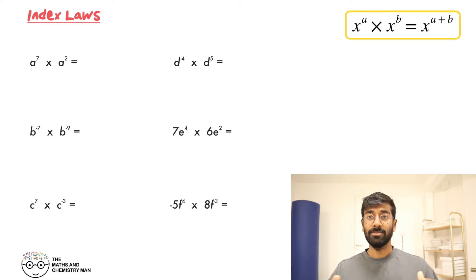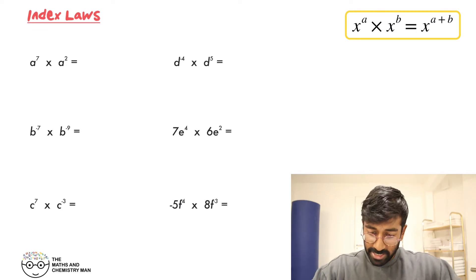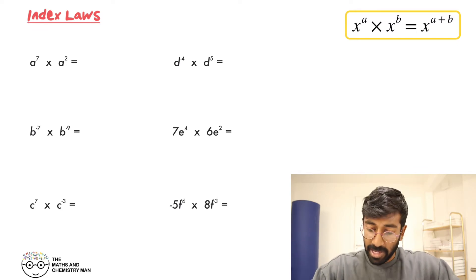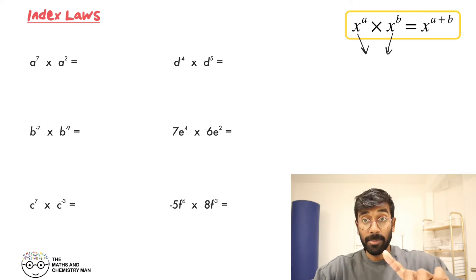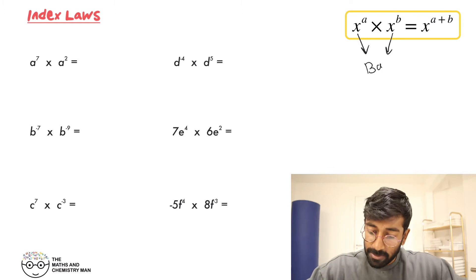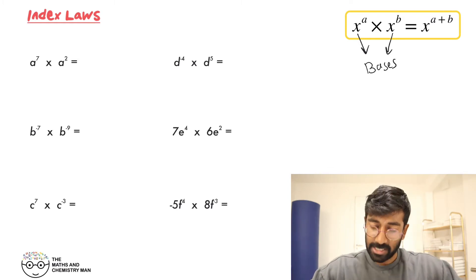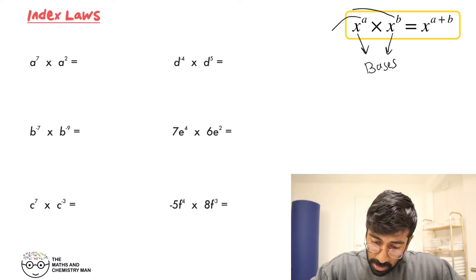So let's get into it. The first index law you've got to know about is where we're multiplying. First, a bit of terminology: the X's here — the things with the powers attached to them — these are called bases. Those are your bases, and then the small numbers or letters...